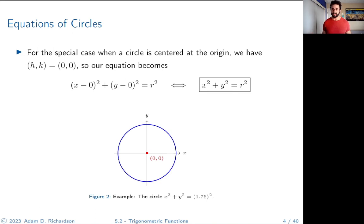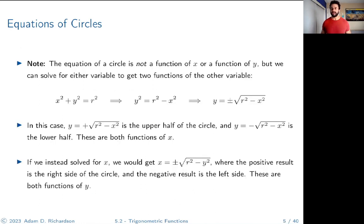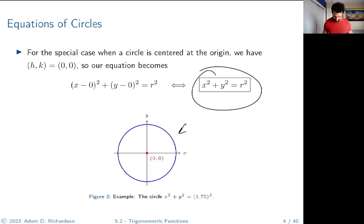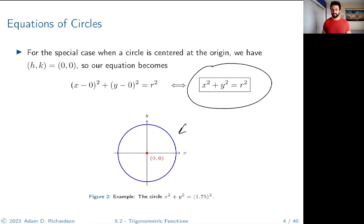For the special case when the circle is centered at the origin, h and k are both zero, so the equation becomes x² + y² = r². That's the equation of a circle of radius r centered at the origin. One important thing to note: the equation of a circle is not a function — it's a relation, relating x and y in the form of a circle.